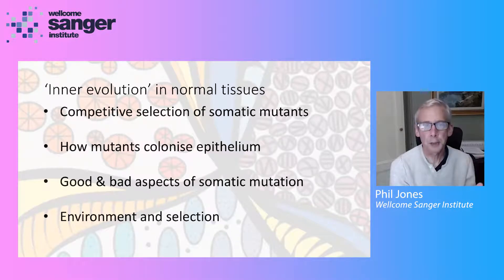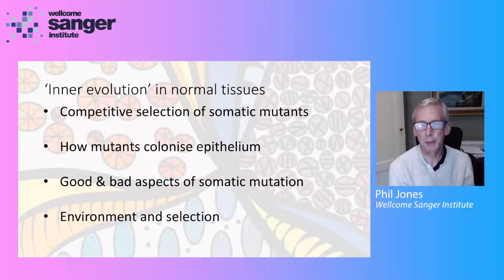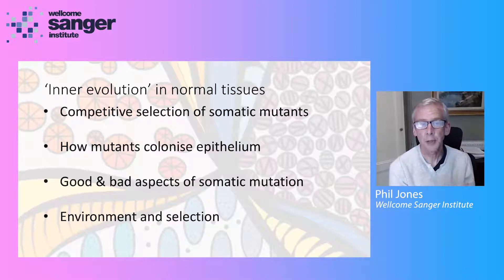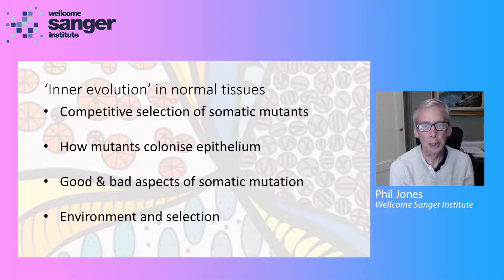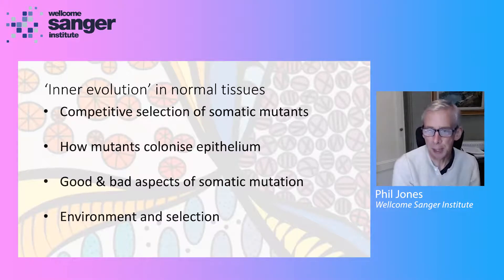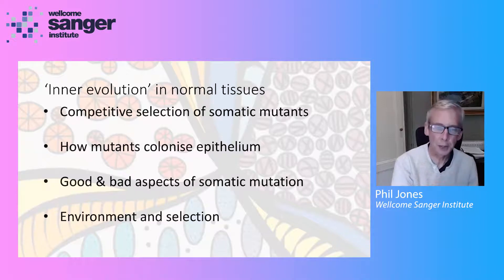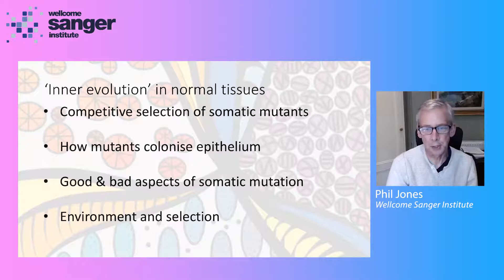In this talk I'm going to outline what we know about the competitive selection of somatic mutations in humans, focusing on one epithelial tissue of the esophagus. I'll talk about the mechanisms by which some mutations colonise the epithelium, the good and bad aspects of somatic mutation, and how we can change the environment to potentially deplete undesirable mutations.